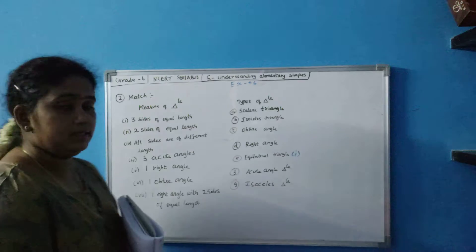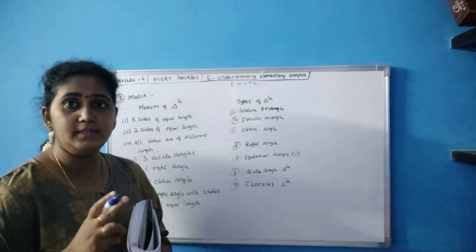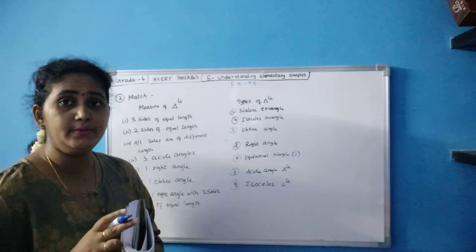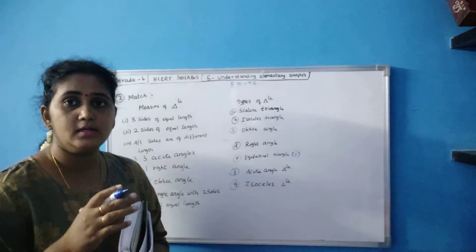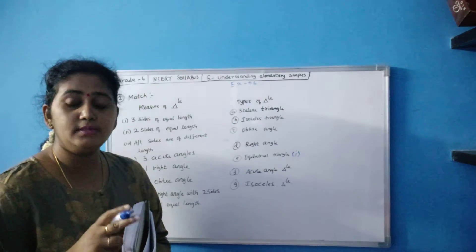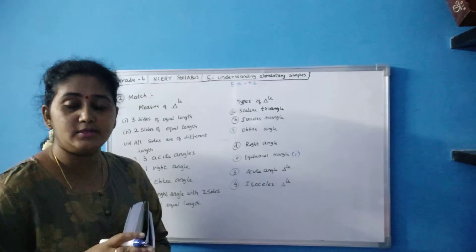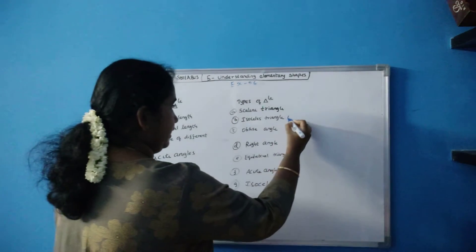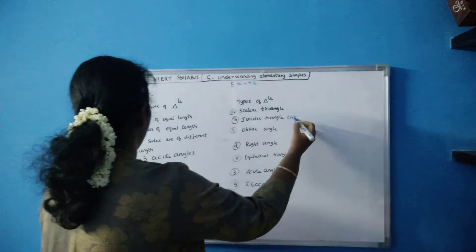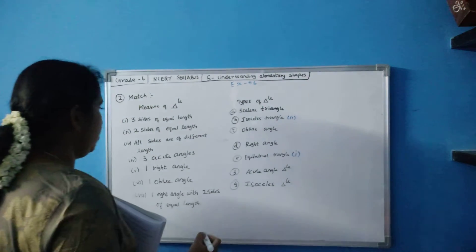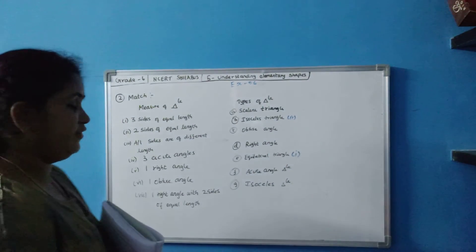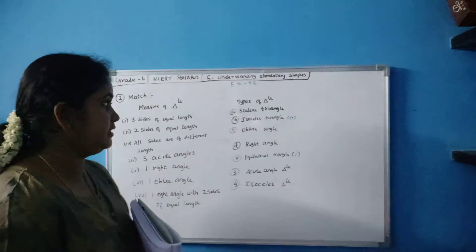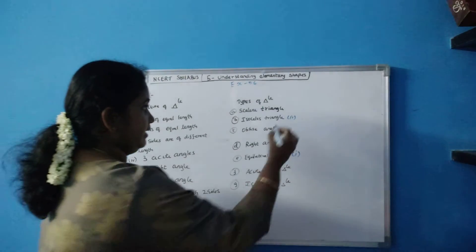Two sides of equal length — if two sides, it is isosceles triangle. To help you remember: keep it as 'two eyes', so two sides means isosceles triangle. All sides of different length — sizes are of different length — that is scalene triangle.